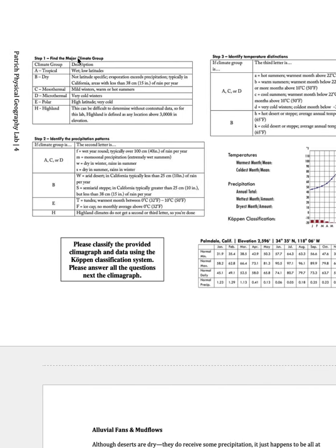So as an example, step one, we need to classify the main climate group. Is it A, tropical; B, dry; C, mesothermal, which is what we experience, mild winters, warm, hot summers; D, microthermal, which I think of Delaware, where they actually get seasons and it gets very frigid and cold; E, polar; and H, highland. Then there's descriptions.